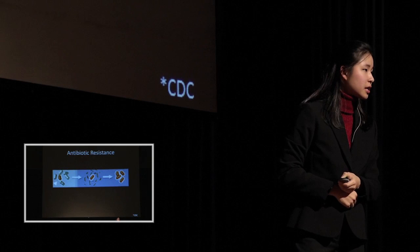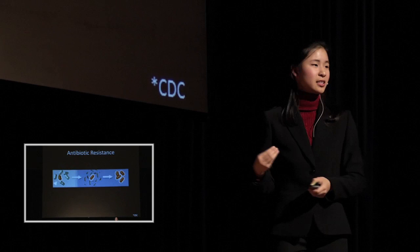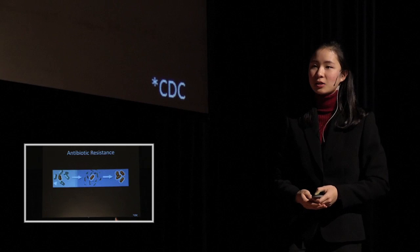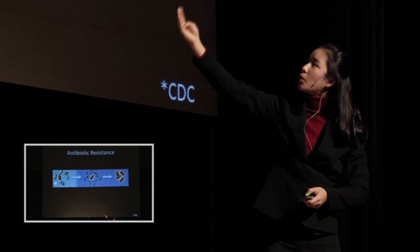But perhaps the most concerning thing about MRSA is that it's resistant to so many different types of antibiotics. That means treatment options may be running out. So how exactly did this resistance occur? Well, it's developed over the past few decades as a result of our overuse and misuse of antibiotics. And I'll show you that kind of with this diagram.